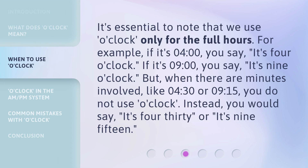It's essential to note that we use o'clock only for the full hours. For example, if it's four o'clock, you say: it's four o'clock. If it's nine o'clock, you say: it's nine o'clock. But when there are minutes involved, like 4:30 or 9:15, you do not use o'clock. Instead, you would say: it's 4:30, or it's 9:15.